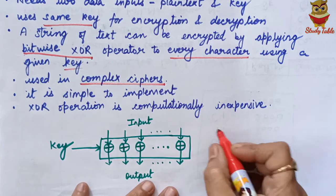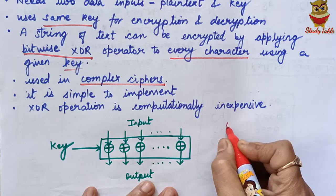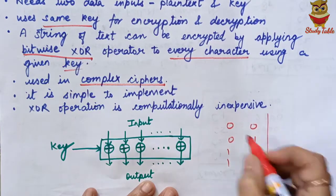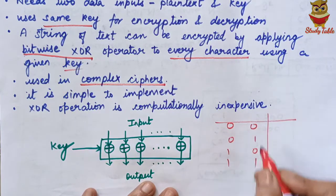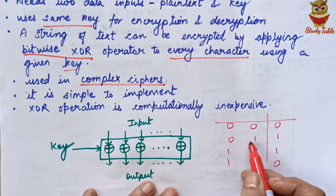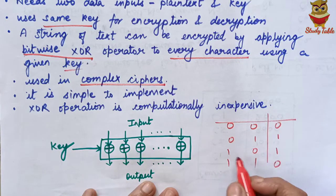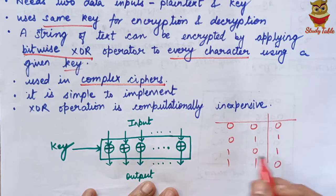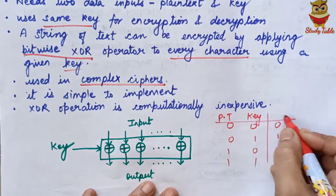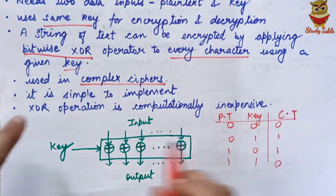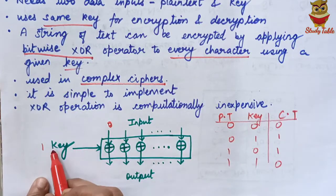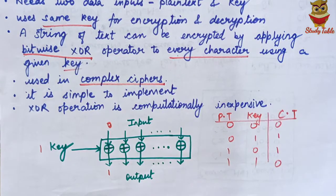I will create a table for the XOR operator, which is used in digital electronics. When both inputs are 0 or both are 1, the output is 0. Otherwise, it will be 1. For example, if the plain text bit is 0 and the key bit is 1, the combination gives an output of 1. That is how XOR works.